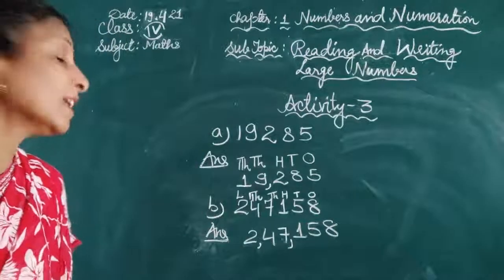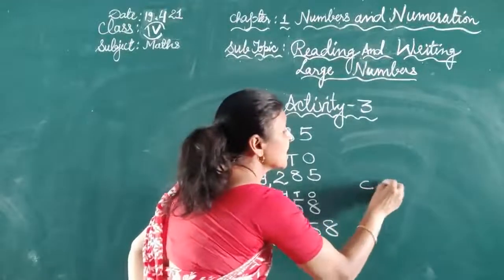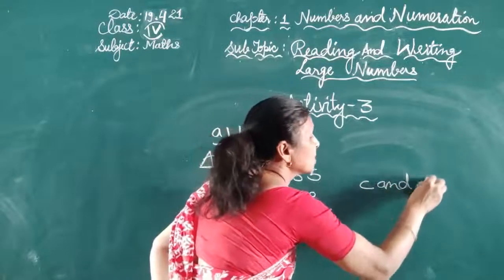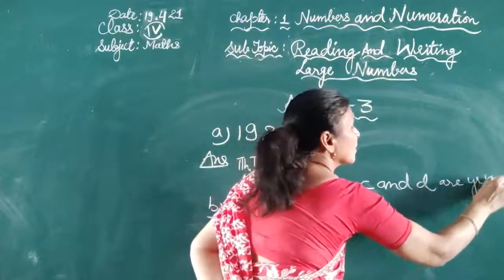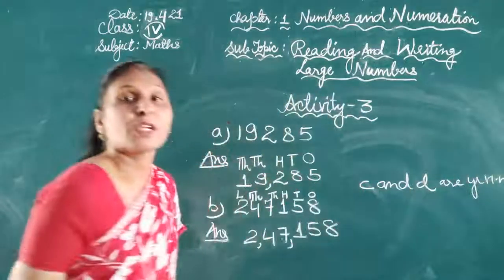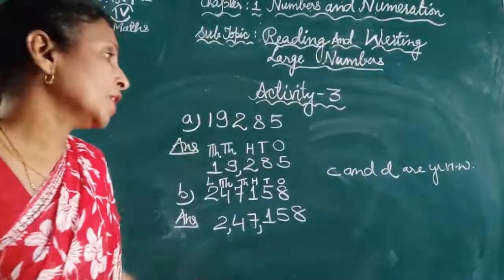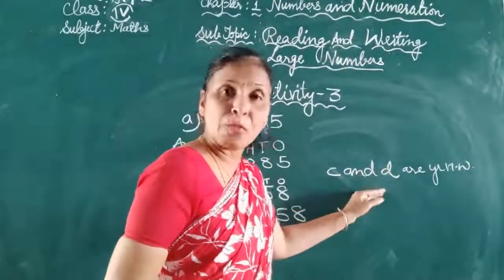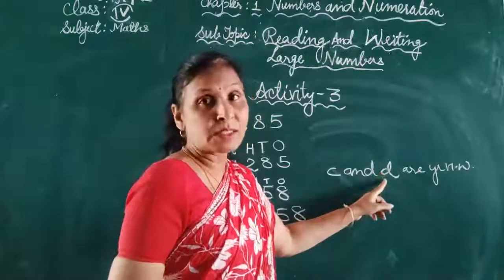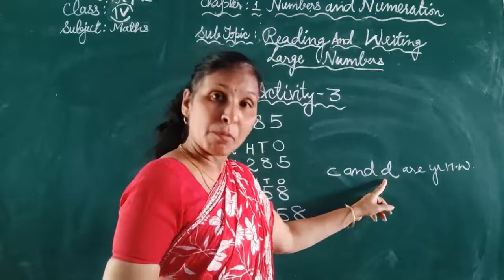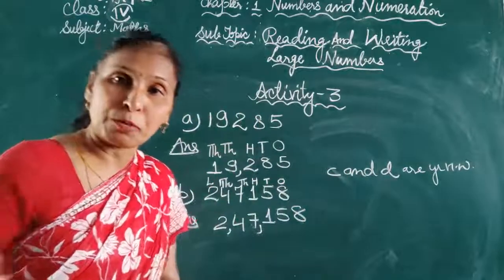The remaining parts C and D are your homework. Parts C and D should be solved in your notebook, while Parts A and B are to be done in the book.